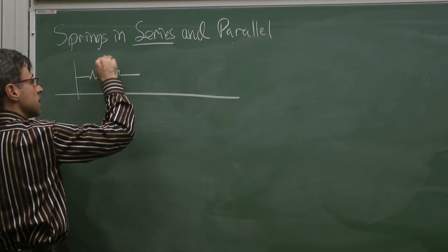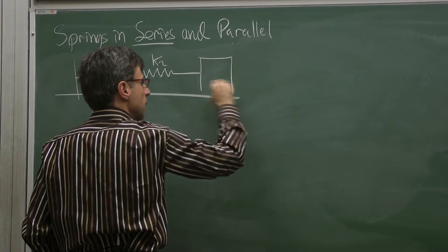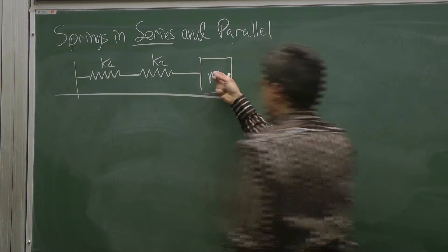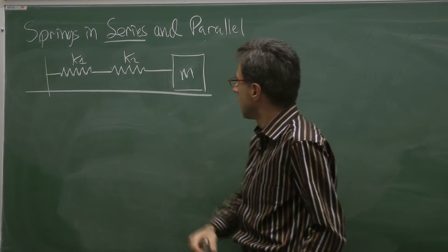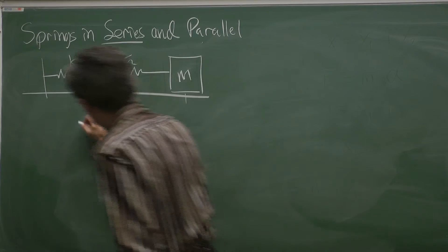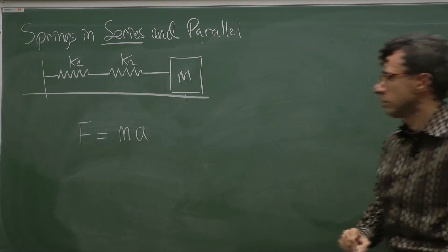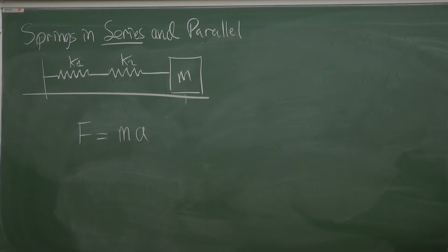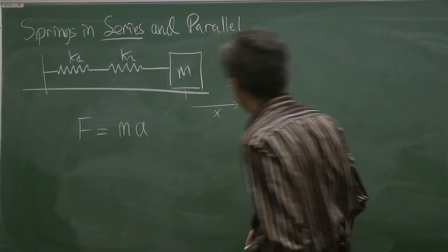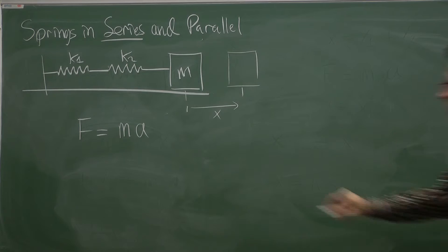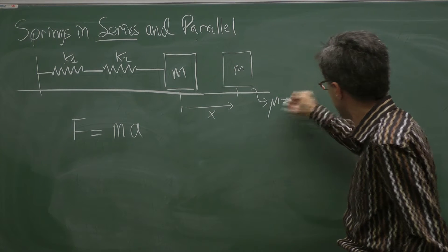Here is the first spring with spring constant k1, which is connected to a second spring with spring constant k2, and that is connected to mass m. If I pull this mass in that direction, there is going to be a force applied on this mass due to the spring system. We denote that force by f, expressed by Newton's law f equals ma. There is no friction; mu equals zero in this example.